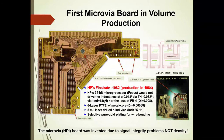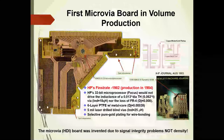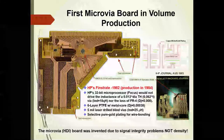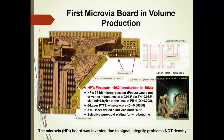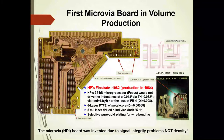Because we're talking about high-density interconnect, this is the first microvia board in volume production, produced in 1982. HDI was not invented due to density — it was invented because in 1982 we had the NMOS3 chip, the first complete 32-bit microprocessor on a single chip. You might know of this as the Pentium predecessor; HP was a partner of Intel. We called this the Focus chip. When we put it on our first PCB and fired it up, it didn't work.